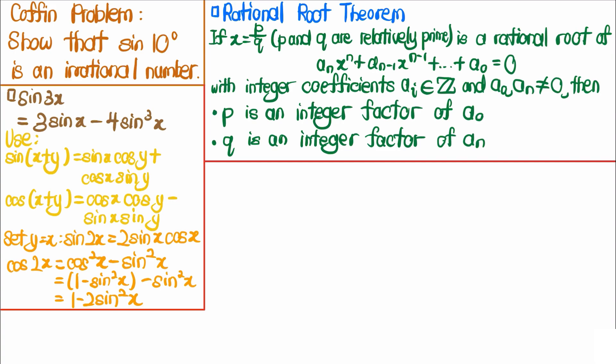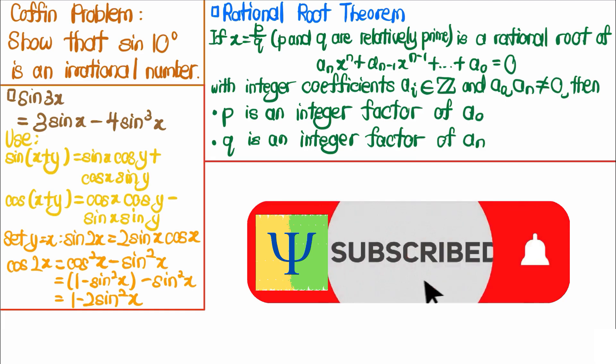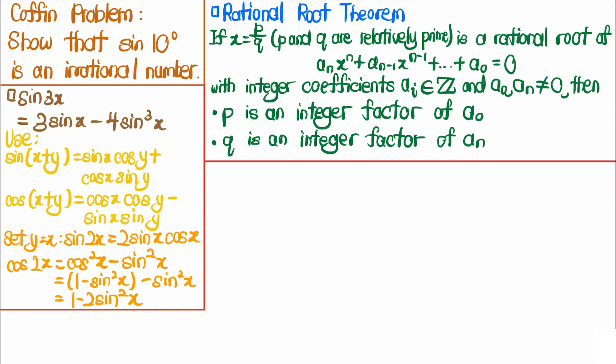To approach this problem we need two things. The first is the rational root theorem, which states that if x equals p over q where p and q are relatively prime and is a rational root of the polynomial aₙxⁿ + aₙ₋₁xⁿ⁻¹ + ... + a₀ = 0 with integer coefficients and a₀, aₙ not equal to zero, then p is an integer factor of a₀ and q is an integer factor of aₙ.